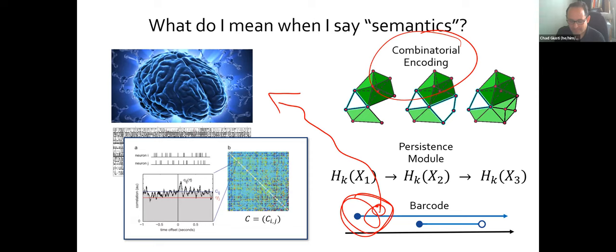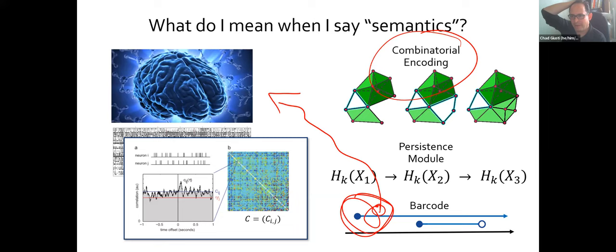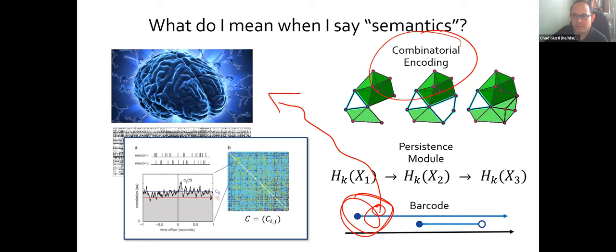One thing I want to say is that the persistence module and the barcode are different. The barcode characterizes the persistence module up to isomorphism. I'm going to be working at the algebraic level with the persistence module. However, it gets extremely cumbersome to say 'element of the interval decomposition of the persistence module' over and over again. So when I say 'bar,' I want you to think about a fixed interval decomposition — it's not an up-to-isomorphism class, it's actually a sequence of vectors in a sequence of vector spaces.